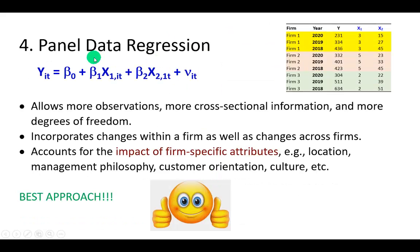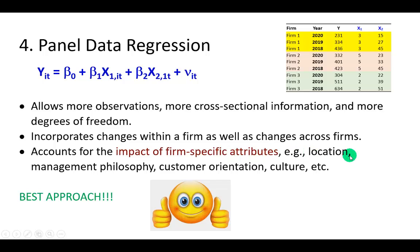Then we get to panel data regression, where for each firm i and for a given time period t, you list all the observations for all the variables Y, X1, and X2. This is definitely the best approach because it accounts for the impact of firm-specific attributes — those attributes that delineate or differentiate firms, including their geographic location, management philosophy, customer orientation, corporate culture, and so on. Definitely the best approach — a smiley two thumbs up.